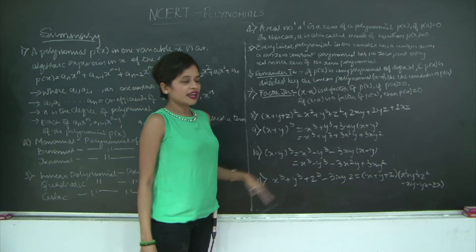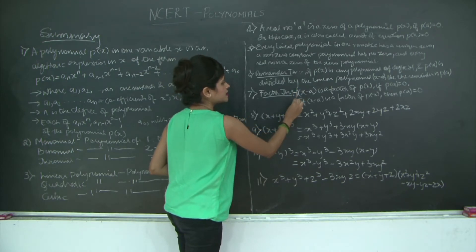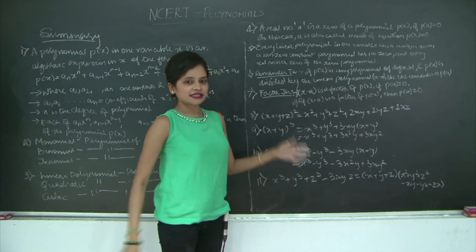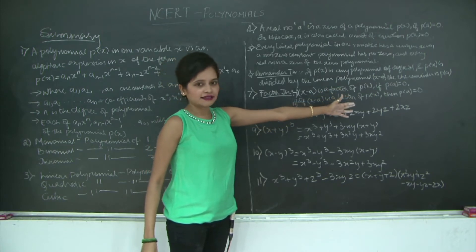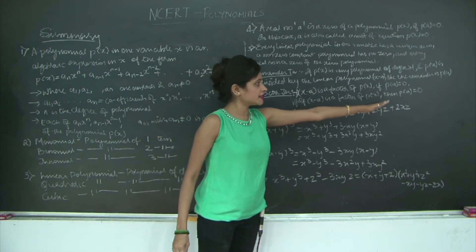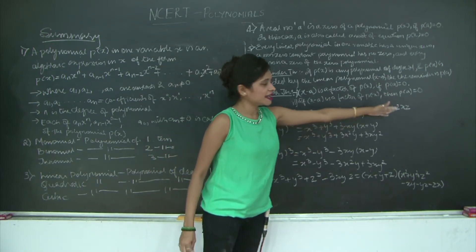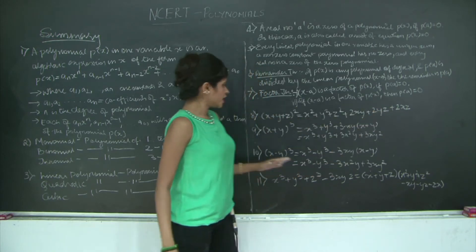The factor theorem. We have two parts to this, first and second. x - a is a factor of P(x) if P(a) equals 0 and vice versa, which is, if x - a is a factor of P(x), then P(a) equals 0.